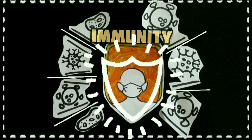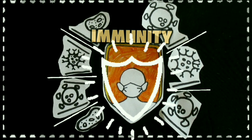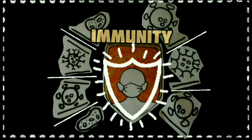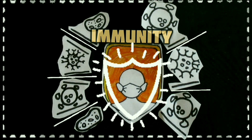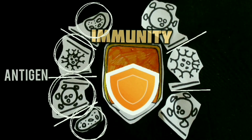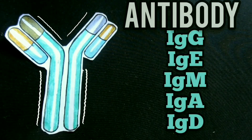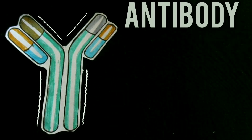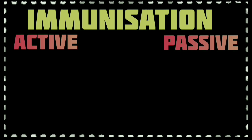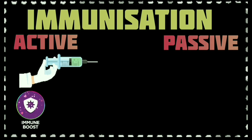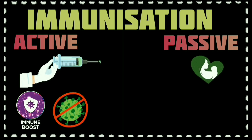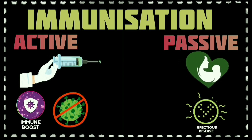Immunity is the ability of an organism to resist a particular infection or toxin by the action of specific antibodies or sensitized white blood cells. That particular infection is caused by foreign particles, viruses, bacteria, or toxins, which are known as antigens. An antibody is a blood protein produced in response to counteract these specific antigens. This immunity is achieved by active or passive immunization. Active immunization is achieved by inoculation with pathogens that induce immunity but do not cause disease. Passive immunization can occur by natural processes, such as transfer from mother to fetus, or by previous infection by the organism.